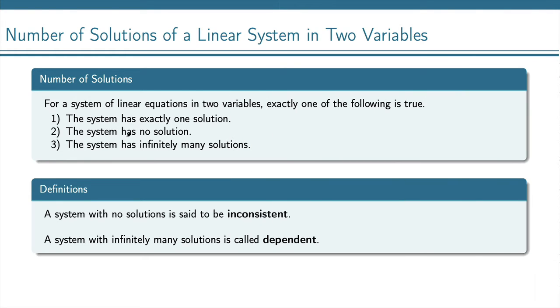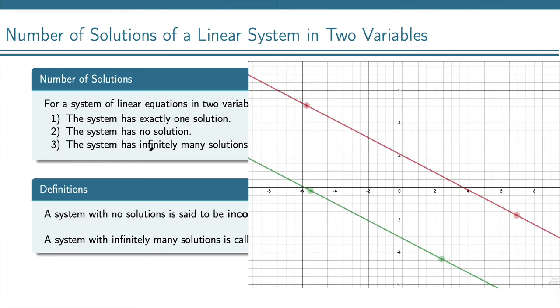And the third case is when the system has infinitely many solutions. And this means that the lines intersect in an infinite number of places. And that's going to happen if the two lines are the same line. So we can place these on top of each other and they intersect at every single point on these lines.